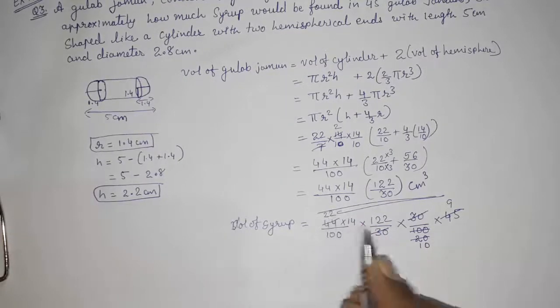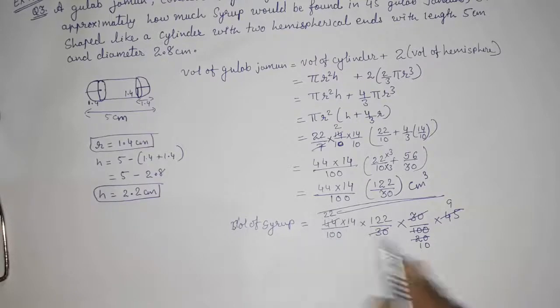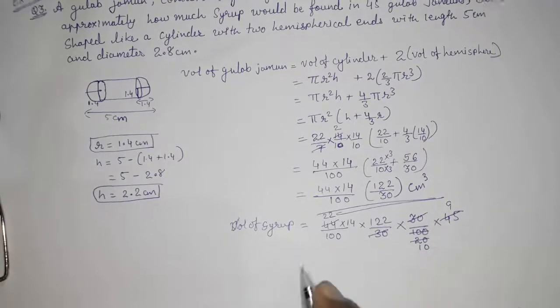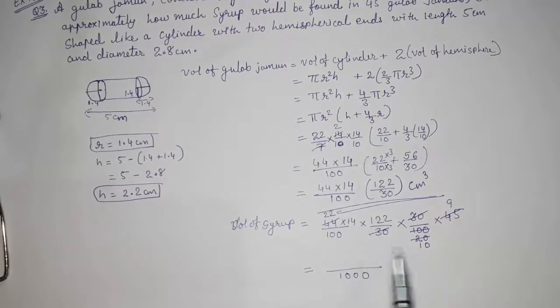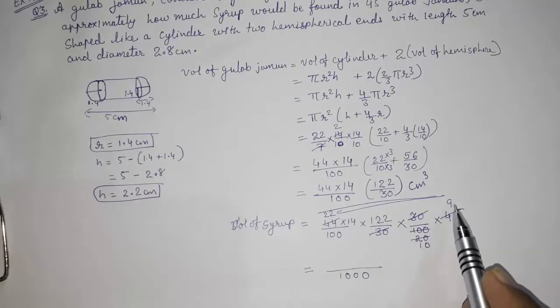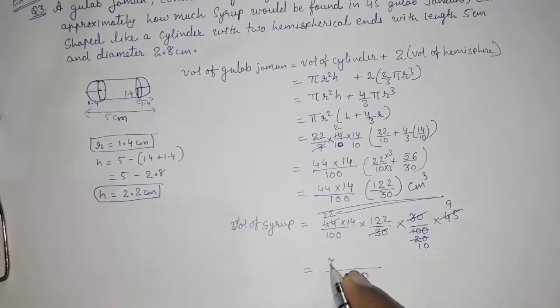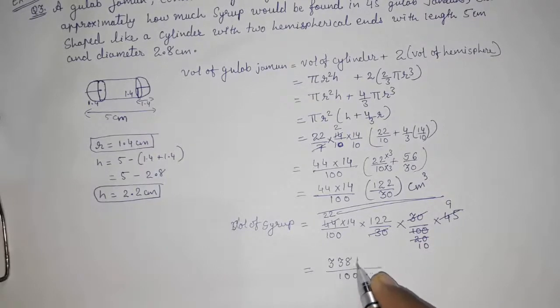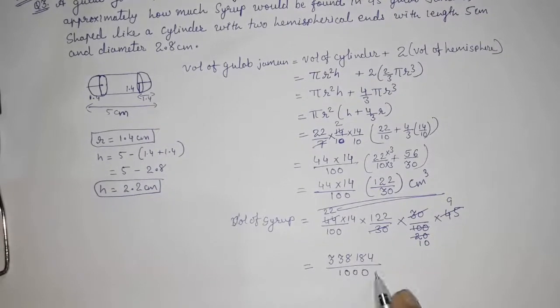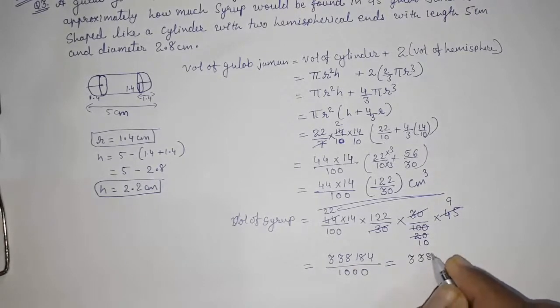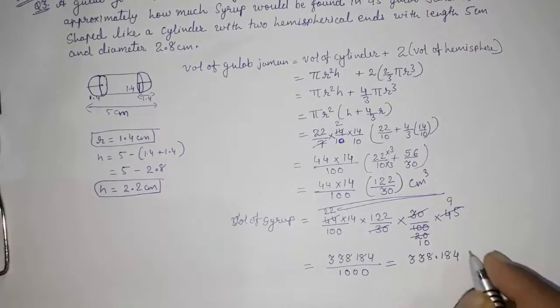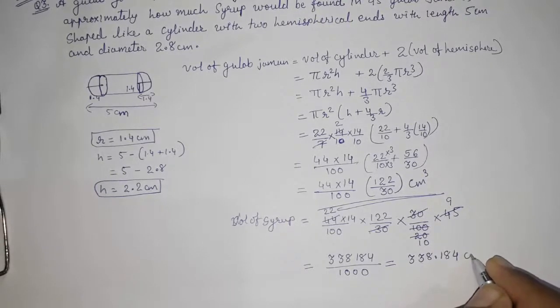Now I am not going to cut because 5 will be remainder so I don't want that. So I am going to directly write 10 into 100 into 10, 1000 in the denominator and I am going to multiply this 22 into 14 into 122 into 9. I will get something like 338.184. Now zeros are there so we can directly keep it in decimal so it will be 338.184 cm³.